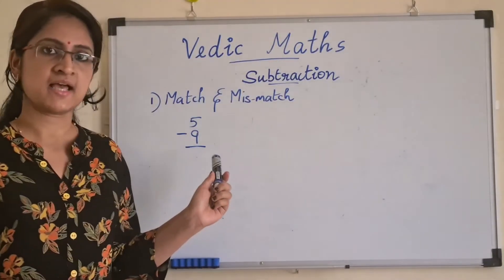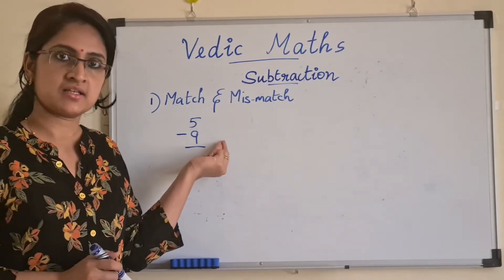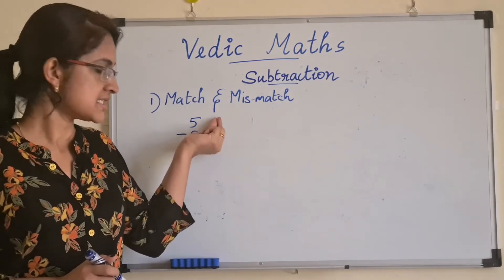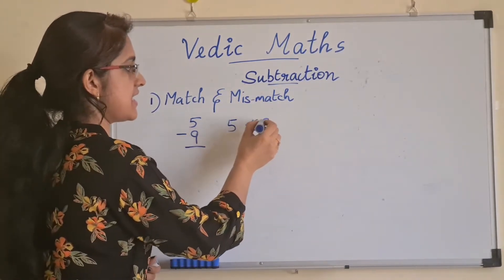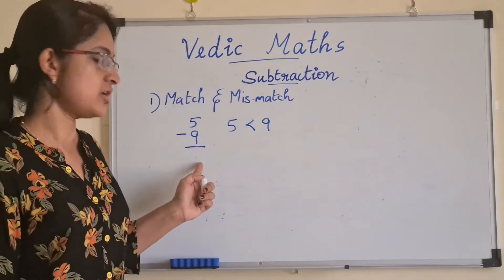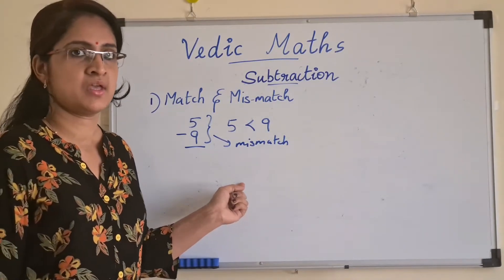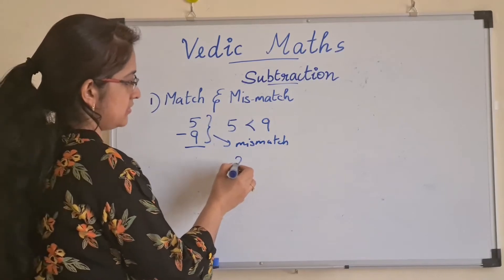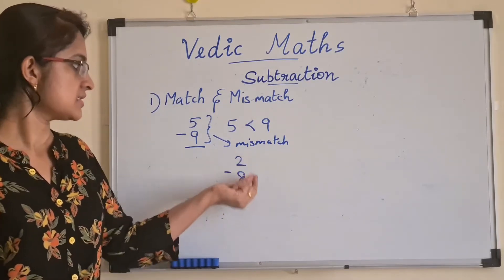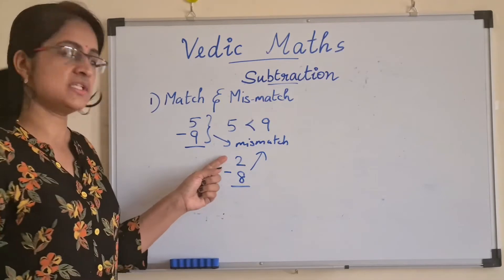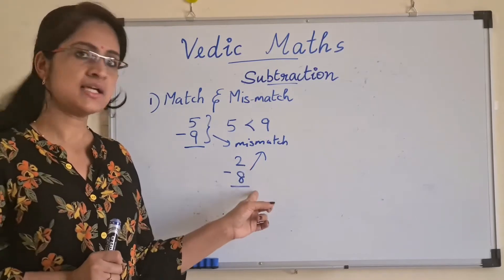Now this is an example of a mismatched combination, because as you can see, 5 is less than 9 — the first number is less than the second number. So this is called a mismatched combination. Another example is 2 minus 8. This is again a mismatched combination because 2 is less than 8. We are not going to deal with single digit mismatched combinations.